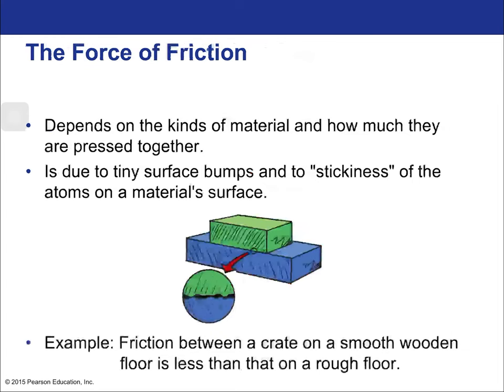The force of friction depends on the kinds of material and how much they're pressed together. To find the friction force between two things, you need to know what those two things are made of — you can look up the friction coefficient between materials, such as Teflon on snow or wood on wood. That friction coefficient tells you how much they stick together. The actual cause of friction is due to tiny surface bumps and the stickiness of atoms on the material surface — tiny electrostatic, atomic, and molecular forces.